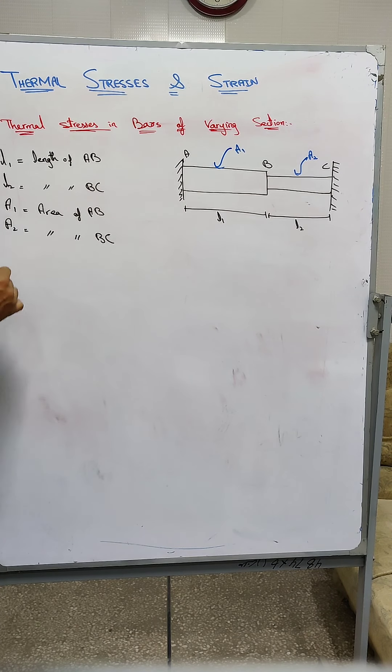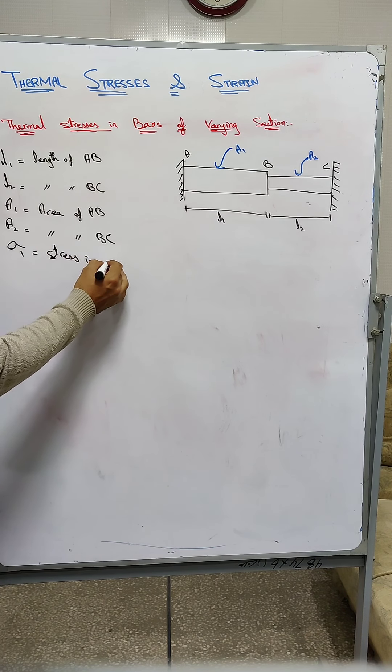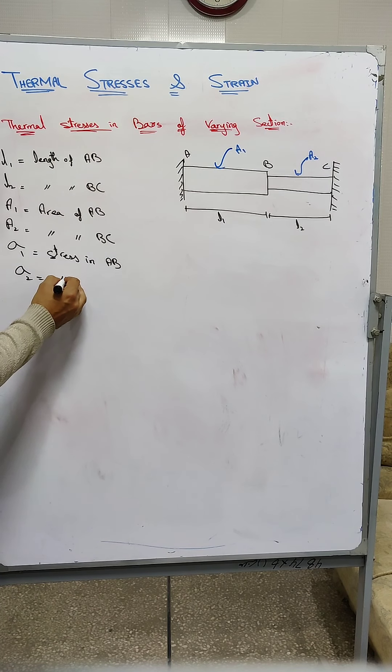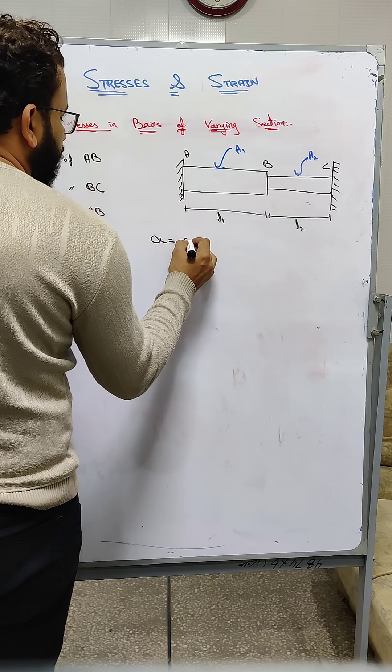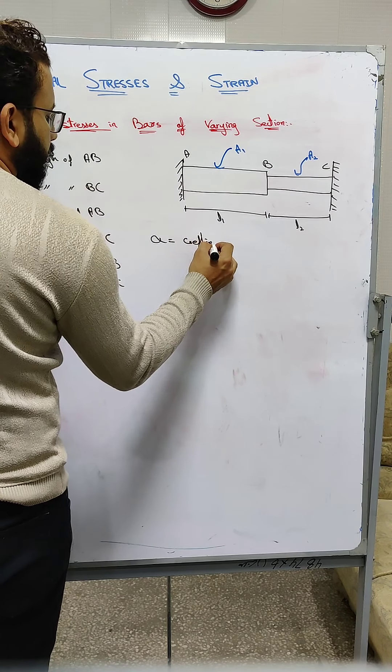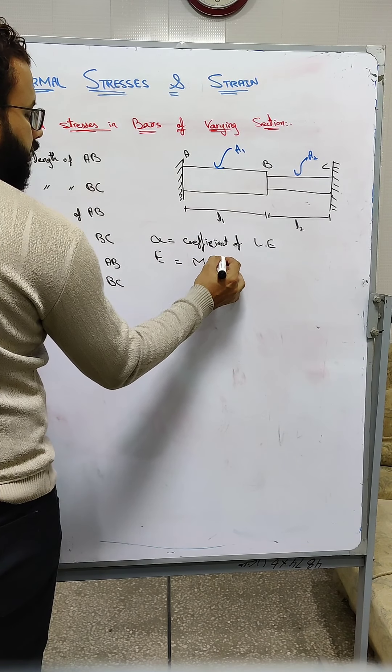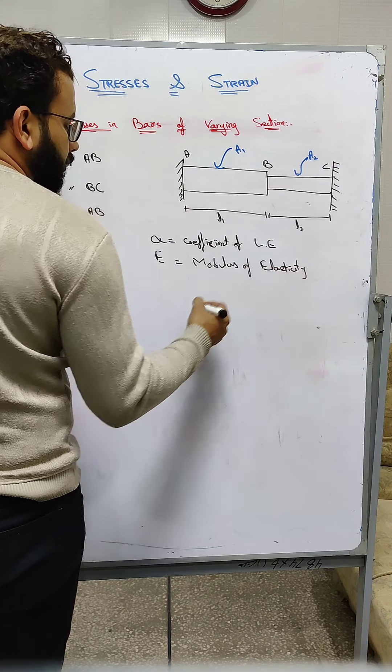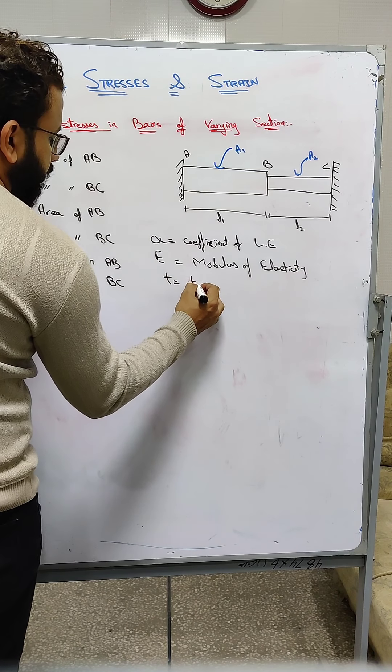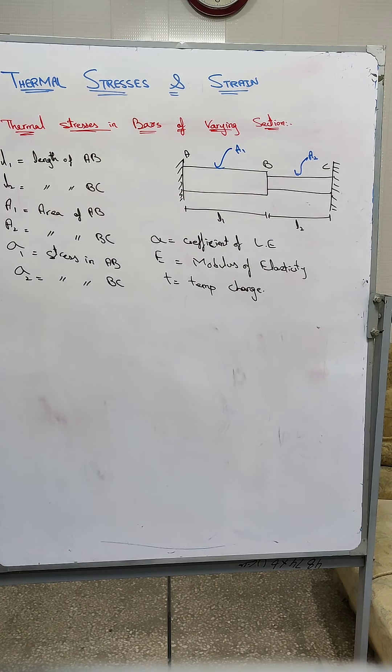Sigma 1 is equal to stress in AB, sigma 2 is the stress in BC. Alpha is equal to the coefficient of linear expansion. E is the modulus of elasticity, and T is the temperature change.